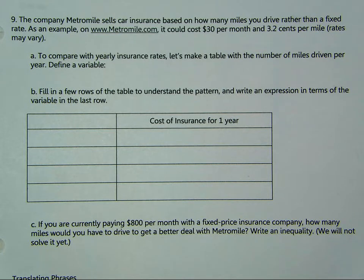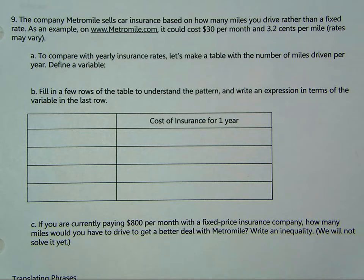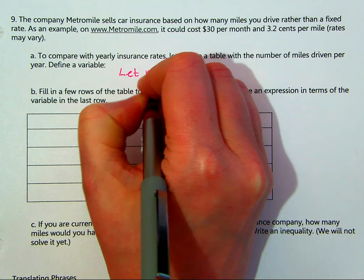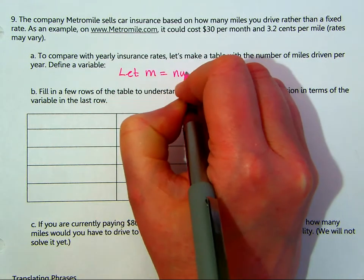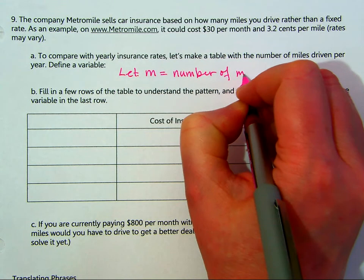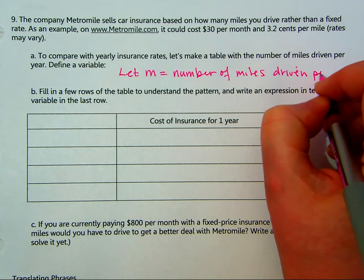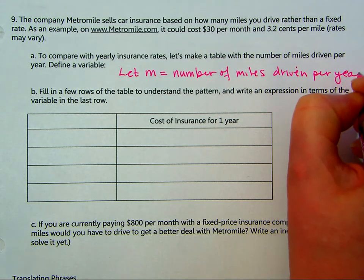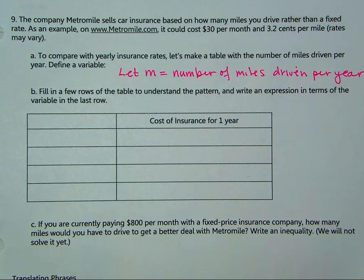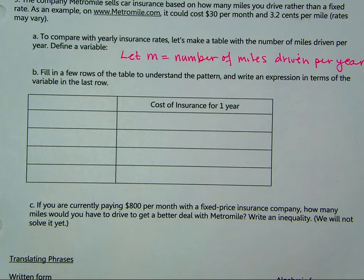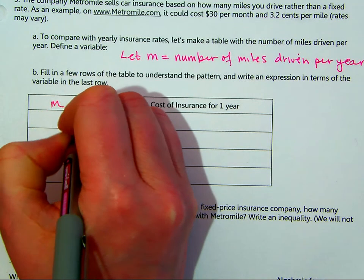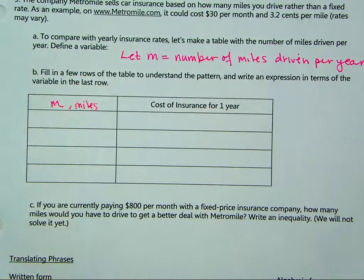Let's define our variable. What's going to vary? The miles are going to vary. Let M equal the number of miles driven — and this would be per year. We could also do a monthly comparison, but we're going to do this yearly. So let's put M, or miles, in our table.